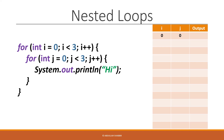j gets initialized to zero, and we check if j is less than three — it is. So we step inside the inner loop and print the statement "high." We reach the end of the inner loop, go back up and increment j by one, changing it from zero to one. We check that j is still less than three, which it is, so we step inside again and print out another "high."